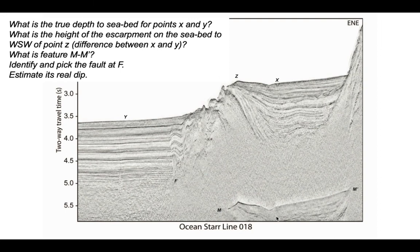If we look within the profile itself, at the bottom right-hand corner, there's a rather ghostly-looking feature, which is M-M prime. What is that? And finally, we'll look at the fault feature which separates those sub-horizontal reflectors beneath Y from the more deformed material that underlies the escarpment labeled F on the profile. We want to pick that fault and then try to estimate what its real dip might be.